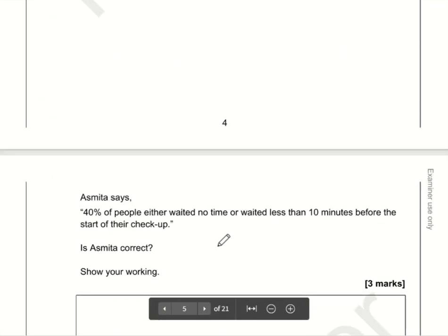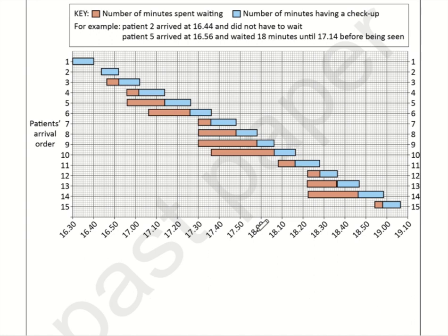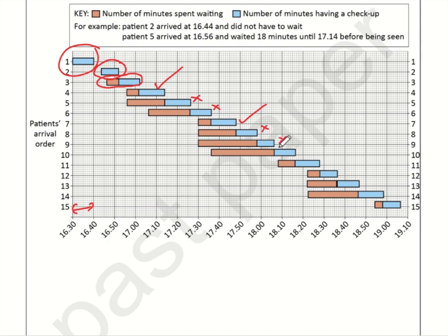We need to check whether 40% of people waited no time or less than 10 minutes. Looking at each patient: this person waited less than 10 minutes, this one didn't wait at all, this one clearly less than 10, this one less than 10, this one more than 10, this one more than 10, this one less than 10, less than 10, not sure about this one, more than 10, more than 10, and less than 10. Counting those who waited less than 10 minutes: one, two, three, four, five, six, seven, eight — that's eight out of 15.